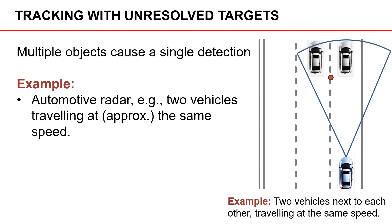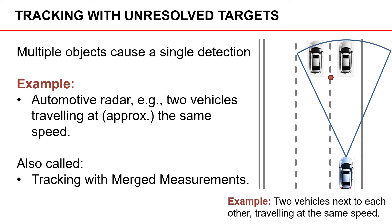The last type of tracking is called tracking with unresolved objects. Here we have an autonomous vehicle traveling on a highway with multiple lanes going in the same direction. In front of the autonomous vehicle there are two cars traveling at approximately the same speed right next to each other. In such a scenario, it sometimes happens that the detector gives only a single detection for the two vehicles, located in between them. This phenomenon is also called tracking with merged measurements — the reflected signal energies from both vehicles become merged in the detector, which outputs only a single detection.